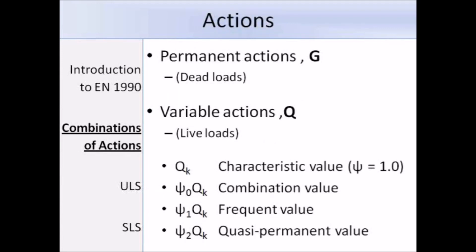Here I'm going to talk about actions — this might sound new to you, but it's the same as loads. We have permanent and variable actions, which are dead and live loads that you might be more familiar with. We also have accidental actions. Variable actions can be leading or non-leading. The characteristic variable action is represented by QK, the combination value by ψ0·QK, the frequent value by ψ1·QK, and the quasi-permanent value by ψ2·QK.